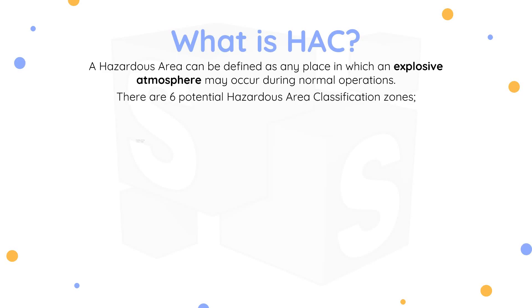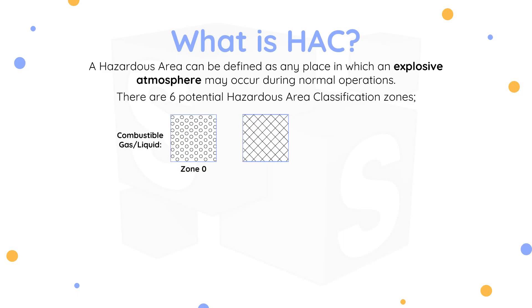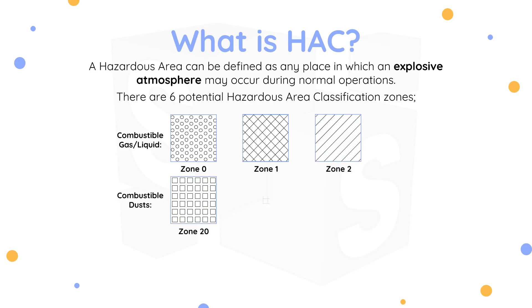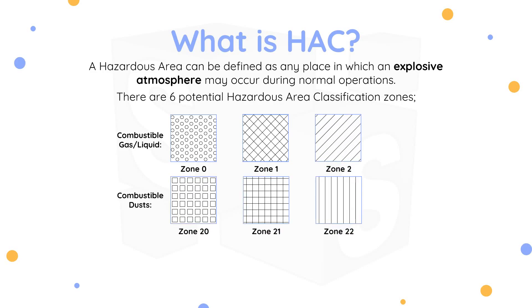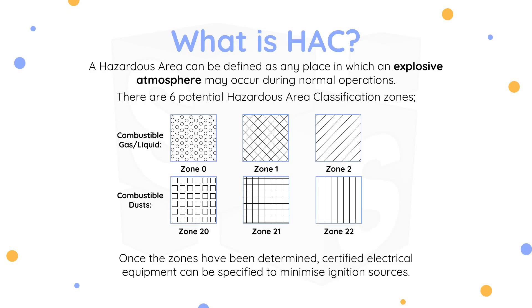There are six potential hazardous area classification zones. Once the zones have been determined, certified electrical equipment can be specified to minimize ignition sources.